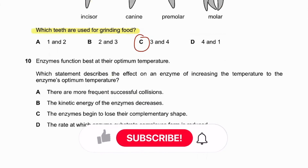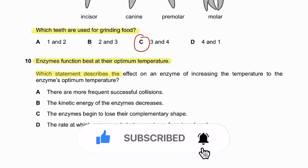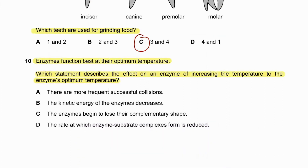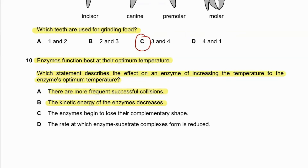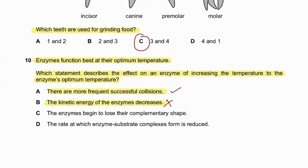Question number ten: enzymes function best at their optimum temperature. Which statement describes the effect on an enzyme of increasing the temperature to the enzyme's optimum temperature? As temperature increases towards the optimum, the rate of enzyme activity increases with more frequent successful collisions. Enzymes do not lose their complementary shape before reaching the optimum — that happens after. The rate of enzyme-substrate complex formation increases. So 10A is the correct answer.